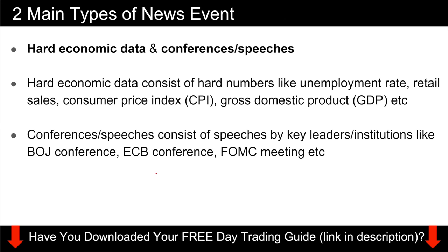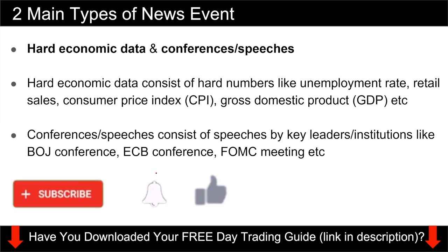Now for the meat and potatoes of today's video: the two main types of news events. This is something we learned from our own experience — you won't find it elsewhere. The first type is hard economic data, which consists of hard numbers. Examples include the unemployment rate, retail sales, consumer price index, gross domestic product, and PPI. These are all data points where you can attach a specific number — for example, unemployment is 3% or 5%. That's what I mean by hard economic numbers.